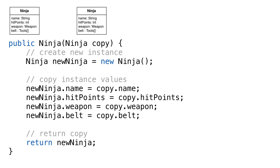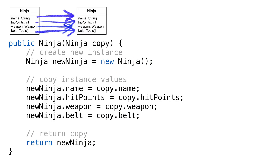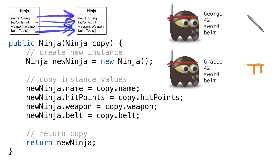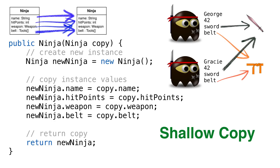So what goes in our copy constructor? The next thought is to create a new enemy object and copy the attributes over — that looks like this. Unfortunately, this won't work either. We wanted two distinct enemies, but we really got two enemies sharing a weapon and a tool belt. If we change a value on one weapon, say to overheating, both enemies will experience the change. That's because we did something called a shallow copy.